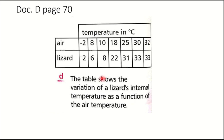Now we will analyze the table of document D. Document D shows the variation of the lizard's internal temperature as a function of the earth temperature — which we can consider the external temperature. So it is the variation of the lizard's internal temperature as a function of the external temperature.